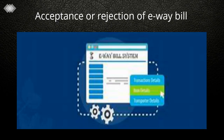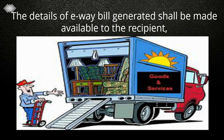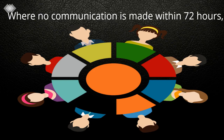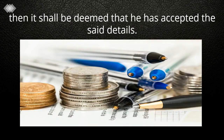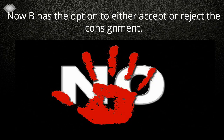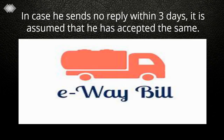Acceptance or Rejection of E-Way Bill: The details of the E-Way Bill generated shall be made available to the recipient, if registered, who shall communicate his acceptance or rejection of the consignment. Where no communication is made within 72 hours, it shall be deemed that he has accepted the said details. For example, A of Delhi is supplying goods to B of Gurgaon. A generated the E-Way Bill and communicated this to B. B has the option to either accept or reject the consignment; in case he sends no reply within 3 days, it is assumed that he has accepted it.